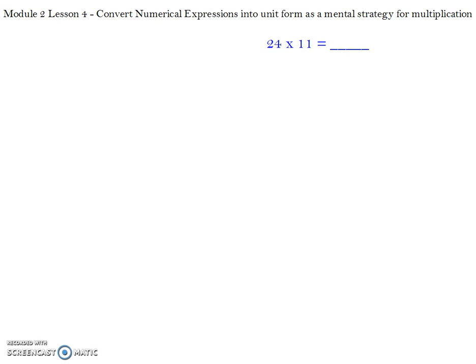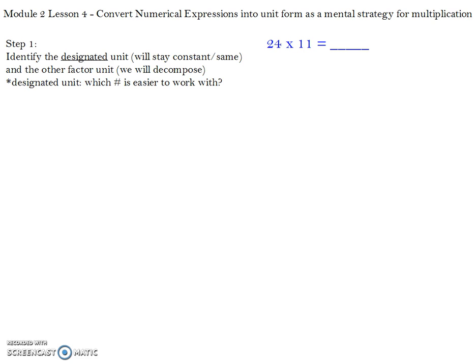The equation, or the numerical expression, we'll be using today is 24 times 11 equals blank. Step 1 with our equation is we want to identify the designated unit, which is the unit that we will keep the same or constant, and then we want to identify the other factor unit, which is the factor that we will decompose.